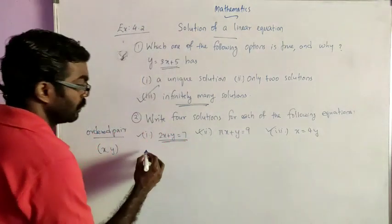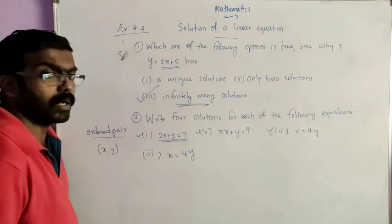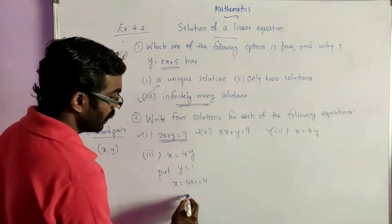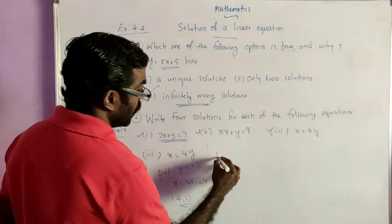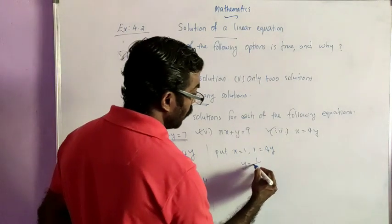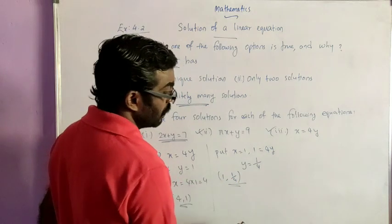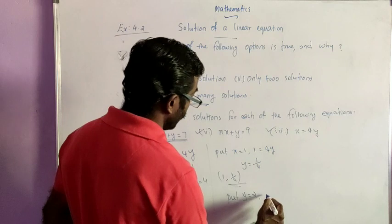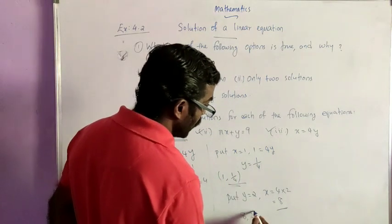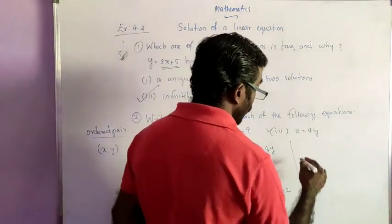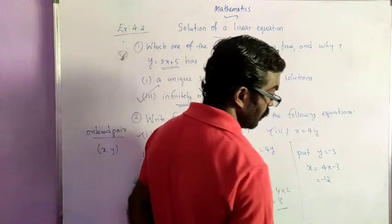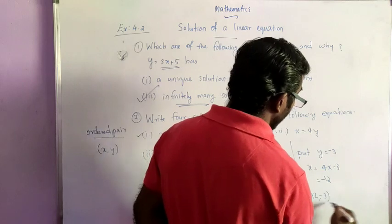Now the third sub-question: x is equal to 4y. Put y equal to 1: x equals 4 times 1, which is 4. Solution: (4, 1). Put x equal to 1: then 1 equals 4y, so y equals 1/4. Solution: (1, 1/4). Put y equal to 2: x equals 4 times 2, which is 8. Solution: (8, 2). Put y equal to minus 3: x equals 4 times minus 3, which is minus 12. Solution: (−12, −3).